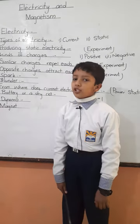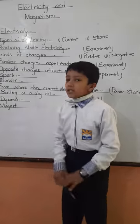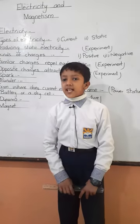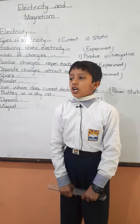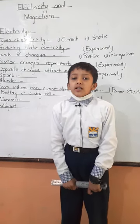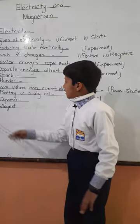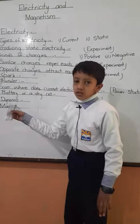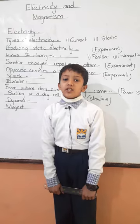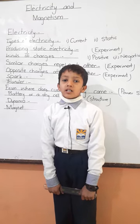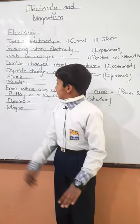A battery or a dry cell produces electricity, like a power station. A dynamo produces electricity for a car, motorcycle, or a cycle.